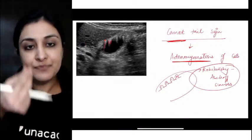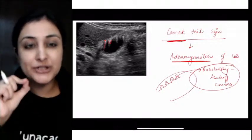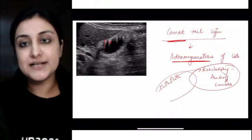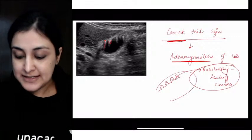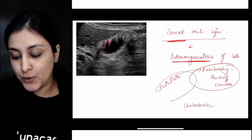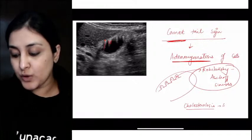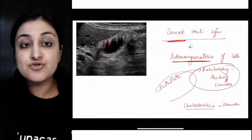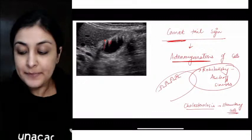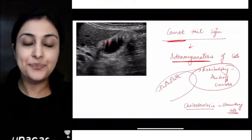These depositions of cholesterol within the Rokitansky-Aschoff sinuses in adenomyomatosis produce comet tail. From the upper wall, when you see these little lines, not like shadowing, that is comet tail adenomyomatosis. You will study cholesterolosis in this condition. This is also called strawberry gallbladder.